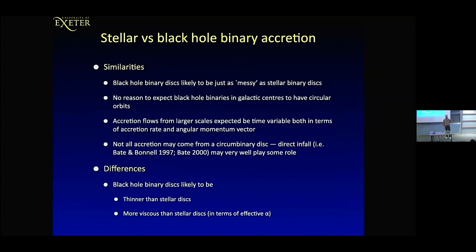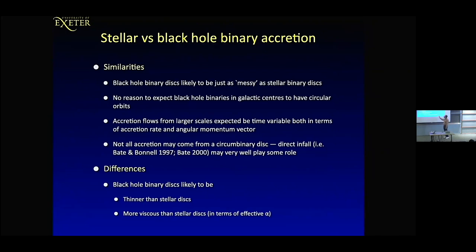This was all stellar binaries — what about black holes? The black hole binary disk situation, at least in galactic centers, is likely to be just as messy. There's no reason to expect that black hole binaries in the galactic center will have circular orbits, and no real reason that the accretion flows should have the same angular momentum vector as the orbit of the black hole binary itself. When these black hole binaries are wide, not all accretion might come from a clean circumbinary disk — there could be infall and circumbinary disk accretion going on simultaneously, making it a lot more complicated.